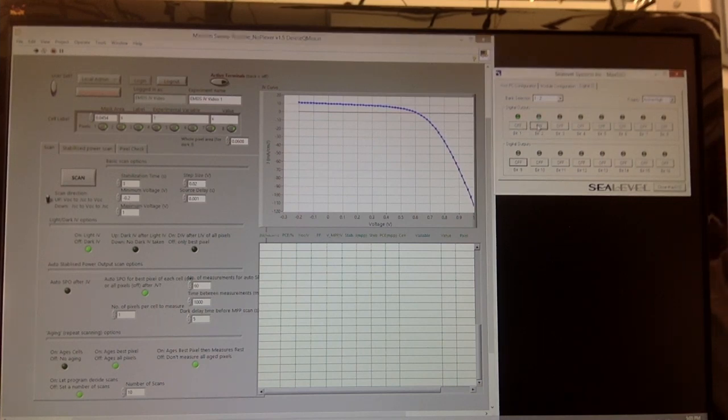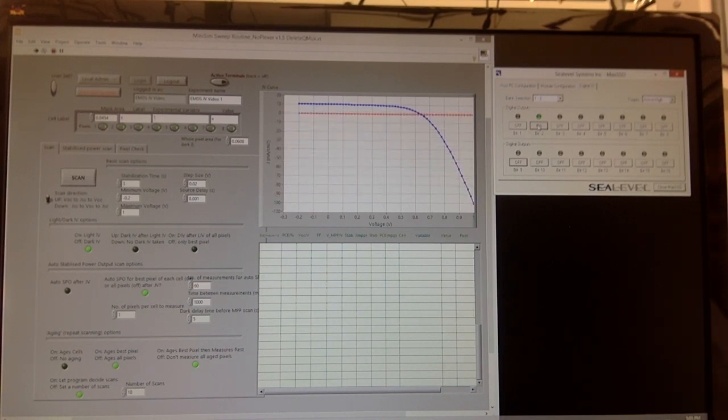Once the second curve appears on the screen, switch pixels using the MaxSSD software. Once all 8 pixels are scanned, the next solar cell can be tested. Do not stop the LabVIEW program until all solar cells have been tested.